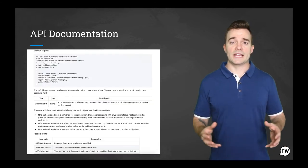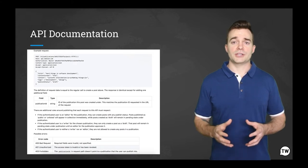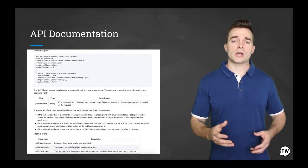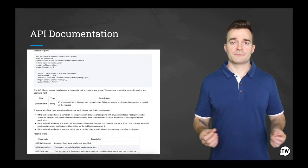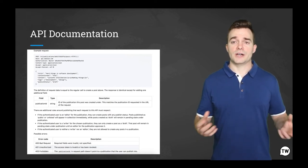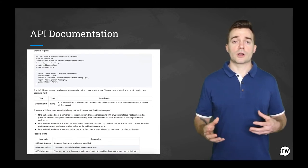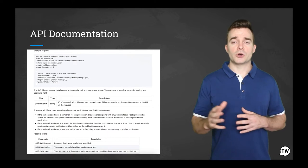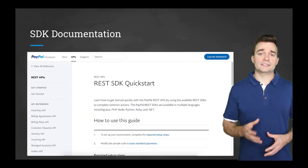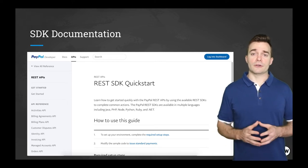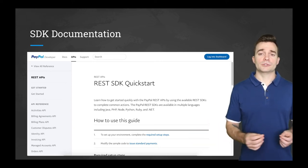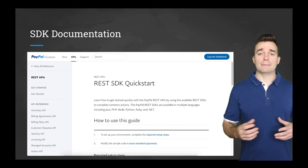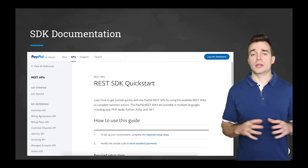The next example that we'll be looking at is API documentation. API or application programming interface documentation describes what services an API offers and how to use those services, aiming to cover everything a client would need to know for practical purposes. It is traditionally found in documentation files, but can also be found in social media such as blogs, forums, and Q&A websites. And this often pairs mostly with software companies. Then we have SDK documentation, which also pairs a lot with software companies. SDK or software development kit documentation is a complete set of APIs that allows you to perform almost any action you would need for creating applications and other tools for developing for the platform that it is for. All SDKs contain APIs, but all APIs are not SDKs.